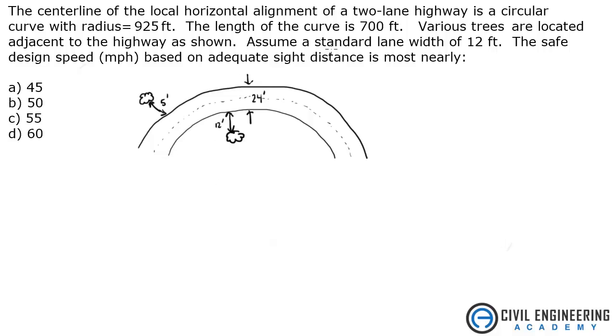So look at what we've been given. We're given a radius of 925 feet, a length of 700 feet, various trees, a tree here and here. Assume a standard lane width of 12 feet. So if this is 24, each of these lanes is 12 feet. The safe design speed based on adequate sight distance is most nearly what?